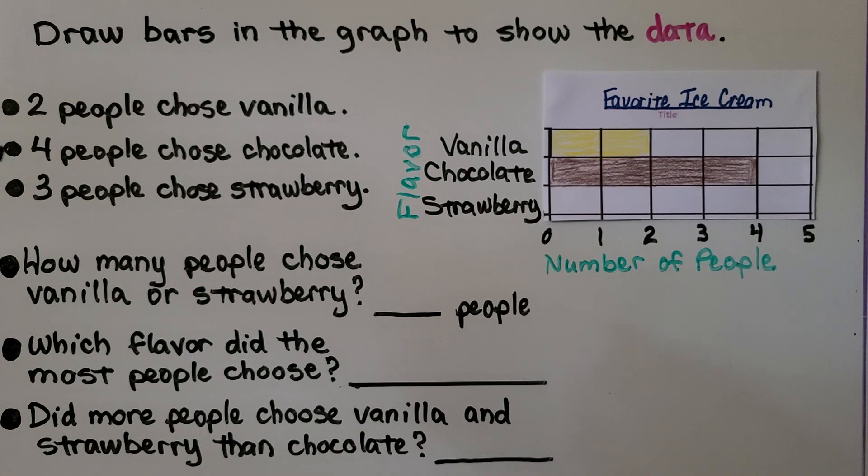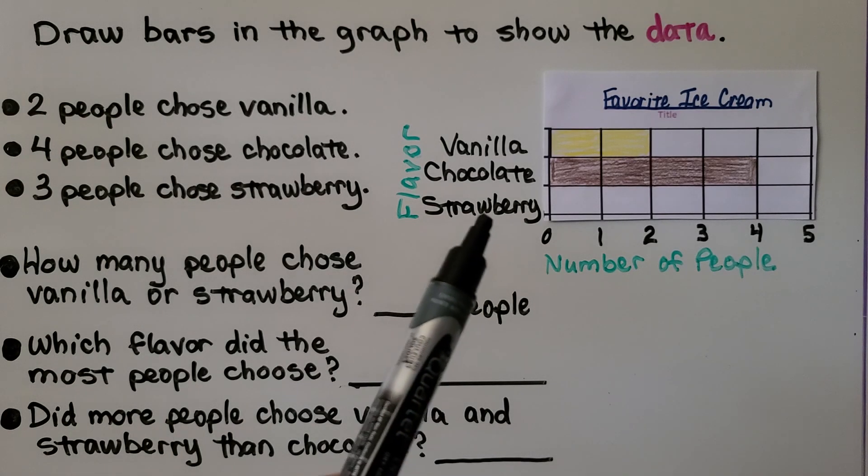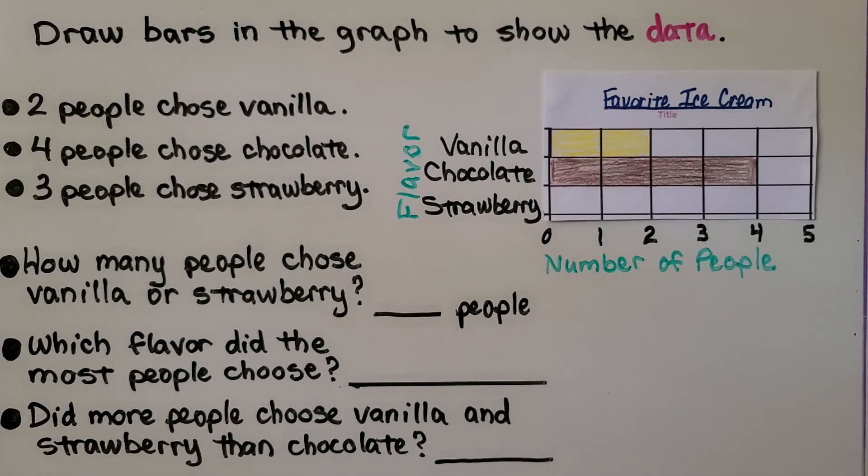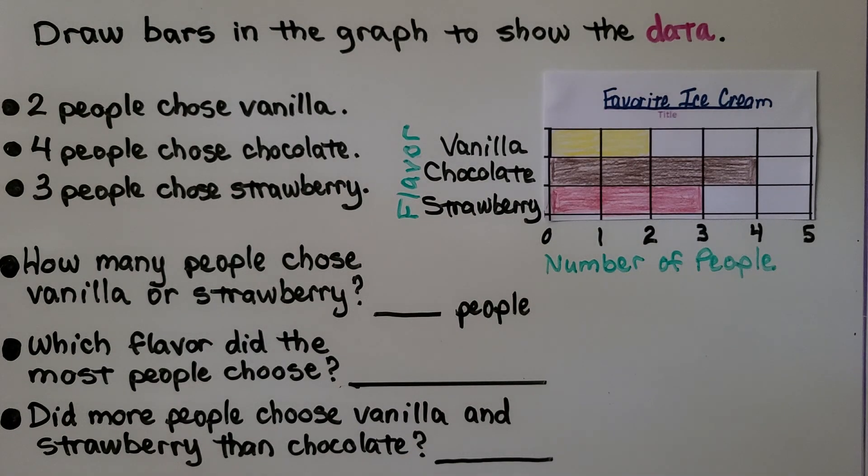Now it's telling us three people chose strawberry. We're going to go to strawberry and we're going to fill in this row up to the number three on the scale. Now we've filled out the graph. We can answer the questions.